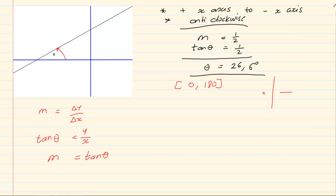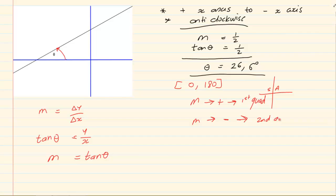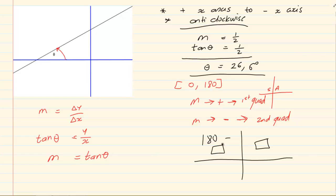From your Cartesian plane, you know that from 0 to 180 degrees, in the first quadrant all are positive, and in the second quadrant only sin is positive. So summarizing this: if your gradient is positive, you are going to be in the first quadrant, but if your gradient is negative, you are going to be in the second quadrant. From your general solution, in the first quadrant the angle is as it is, but in the second quadrant it is 180 minus whatever the angle is.